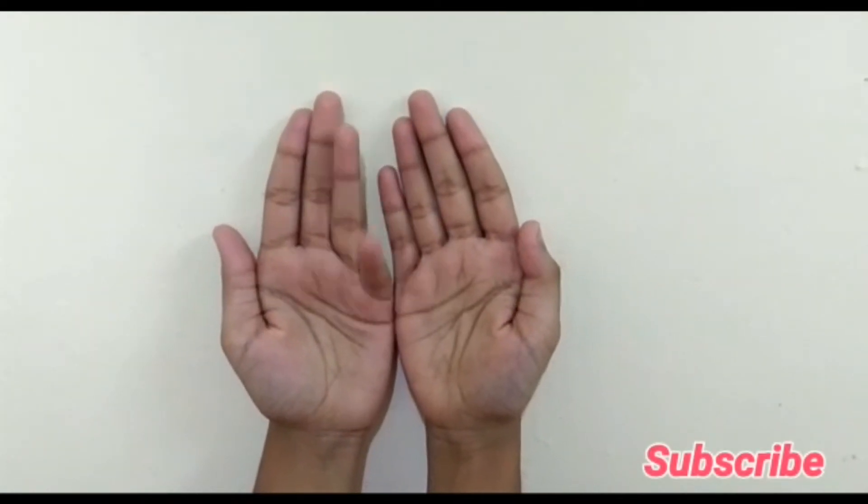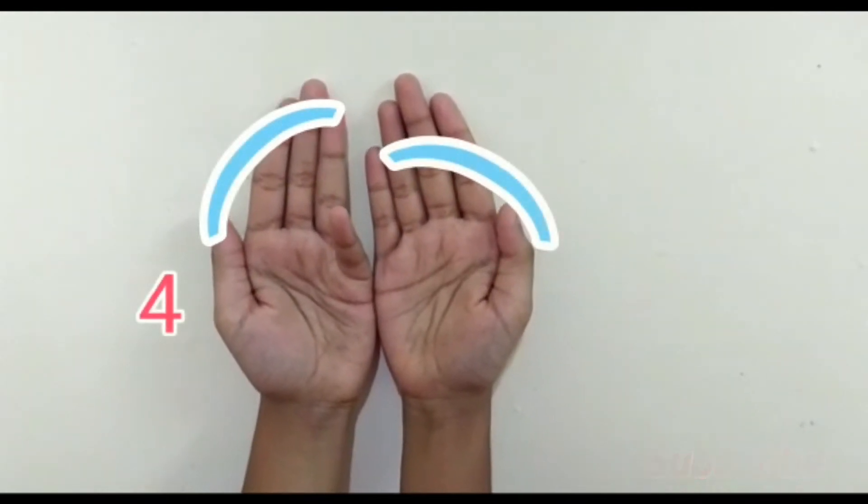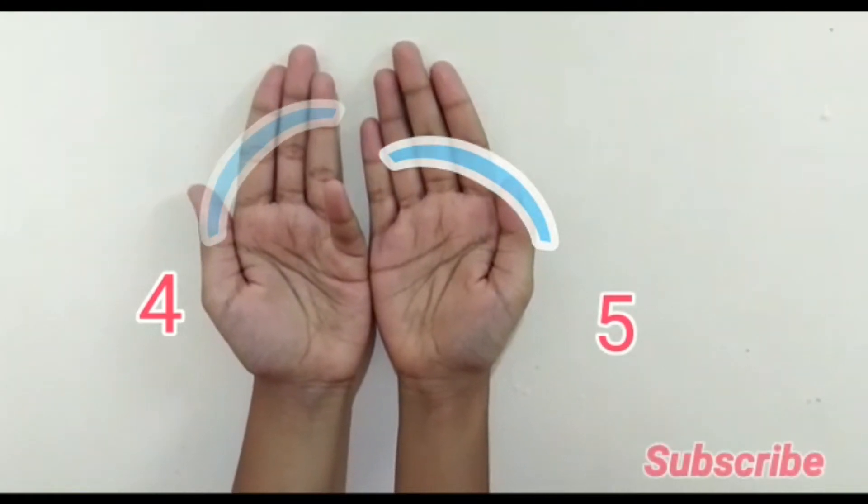5 into 9. So fold your fifth finger. Towards the left side of it it's 4 and towards the right side it's 5. So 5 times 9 are 45.